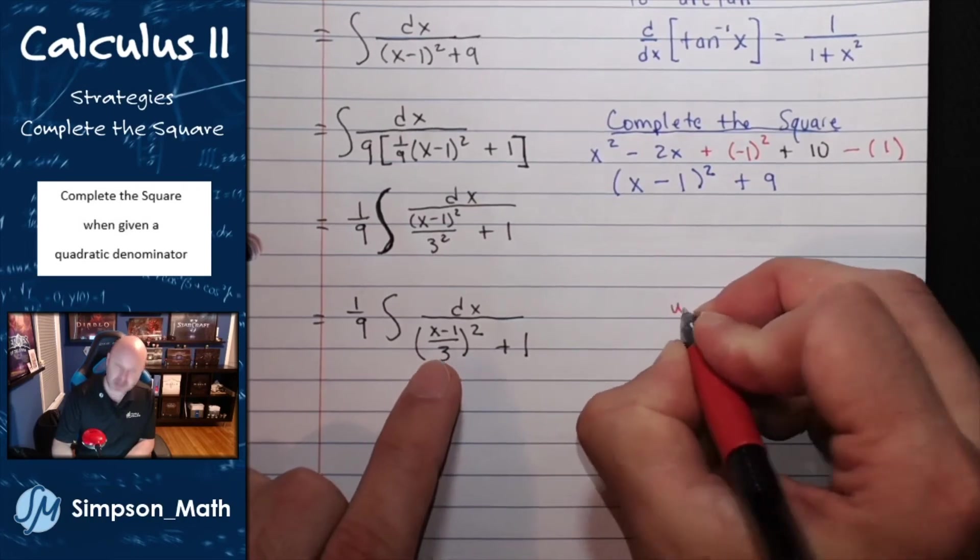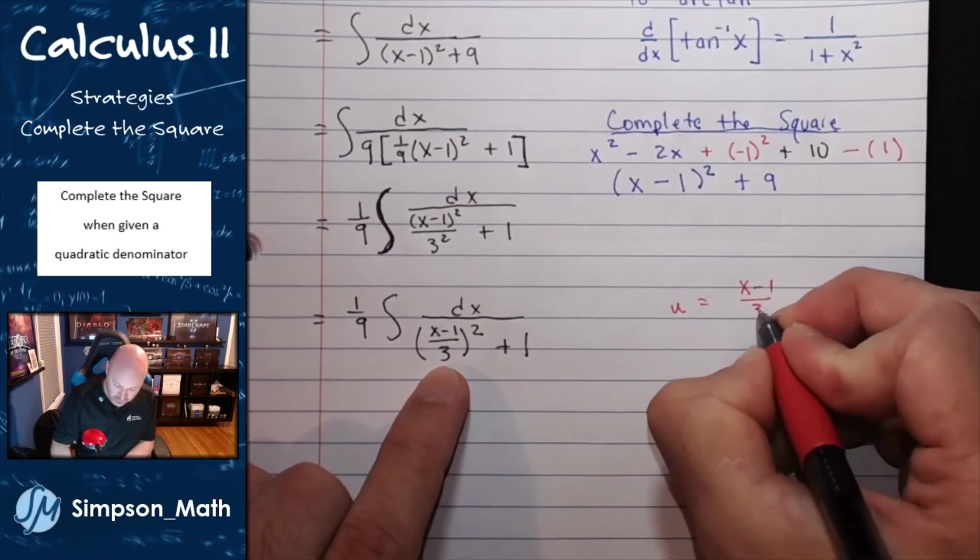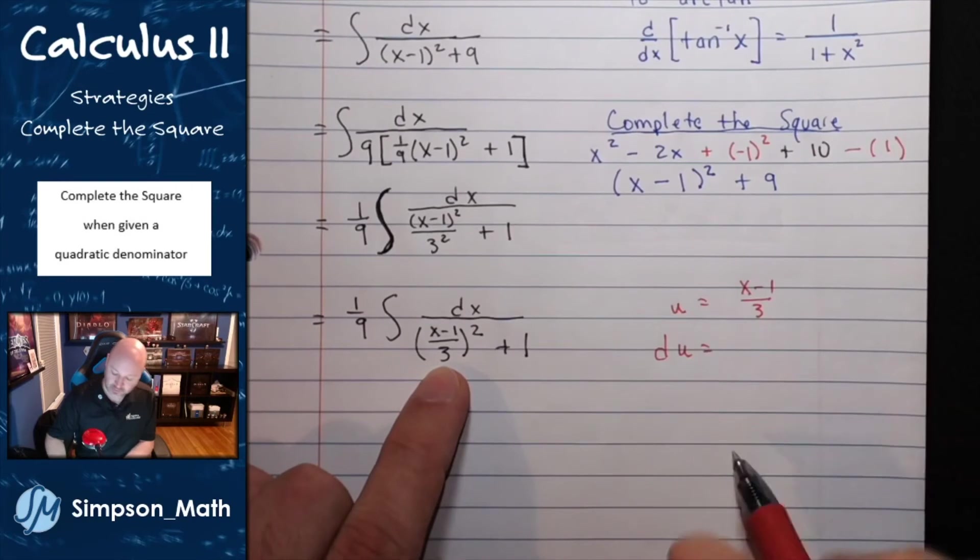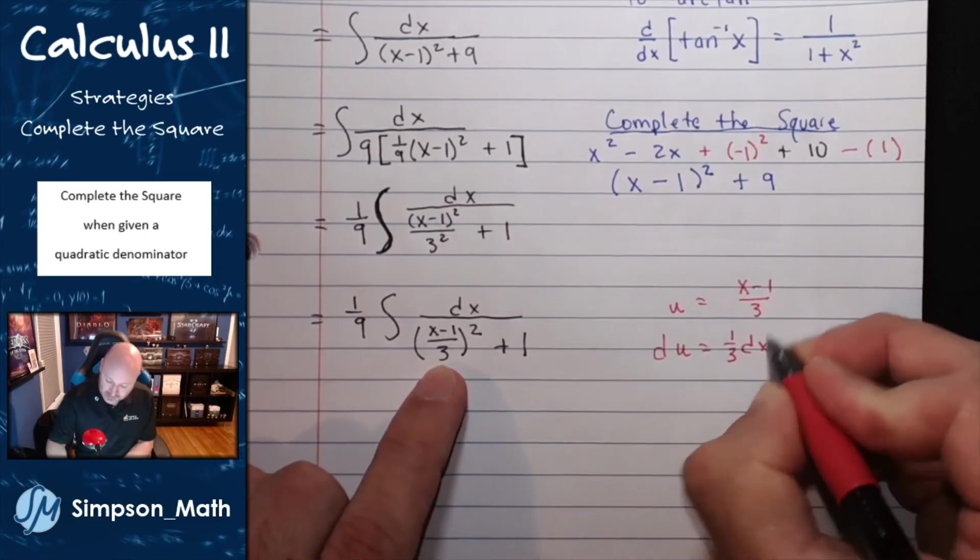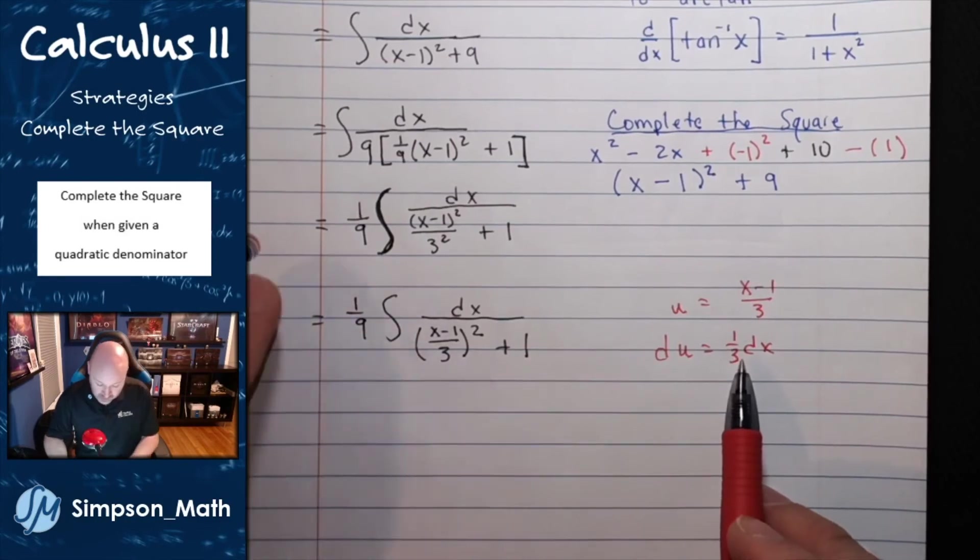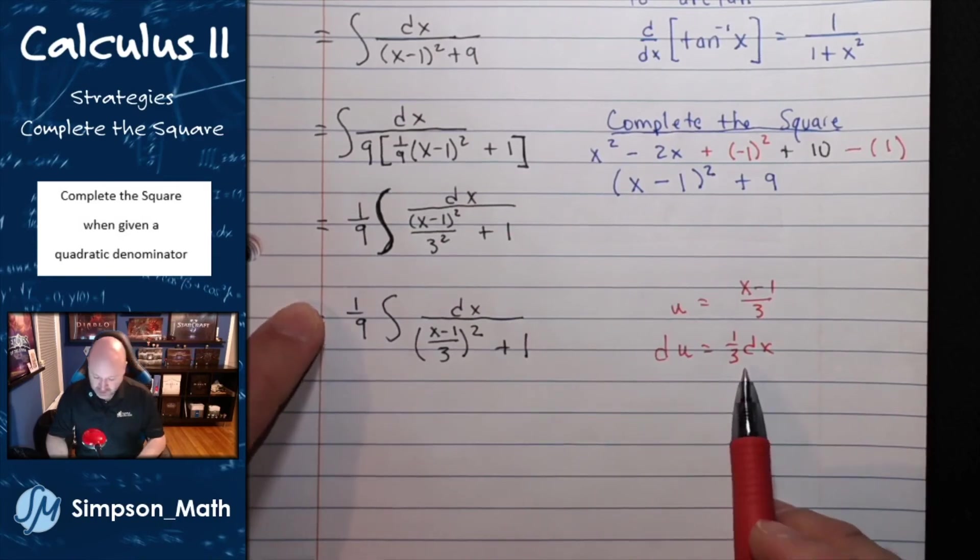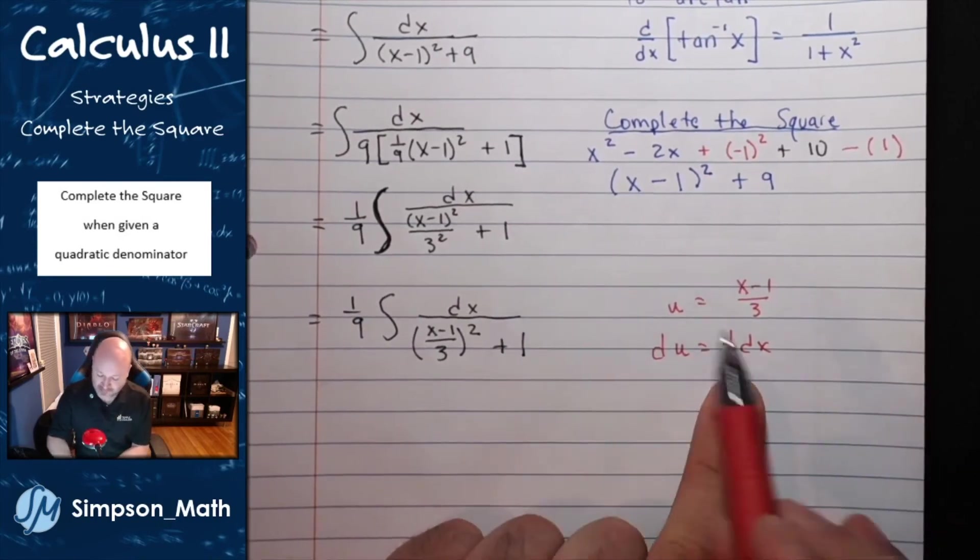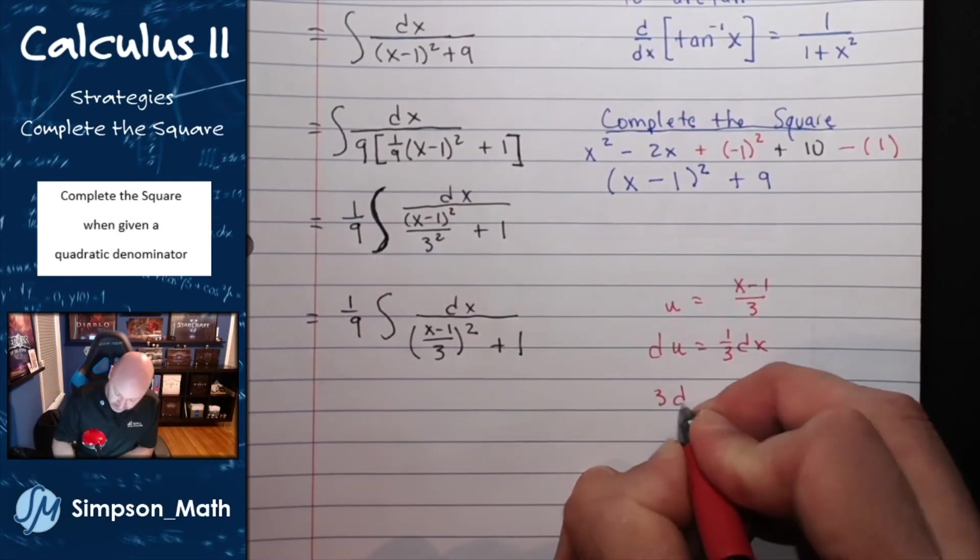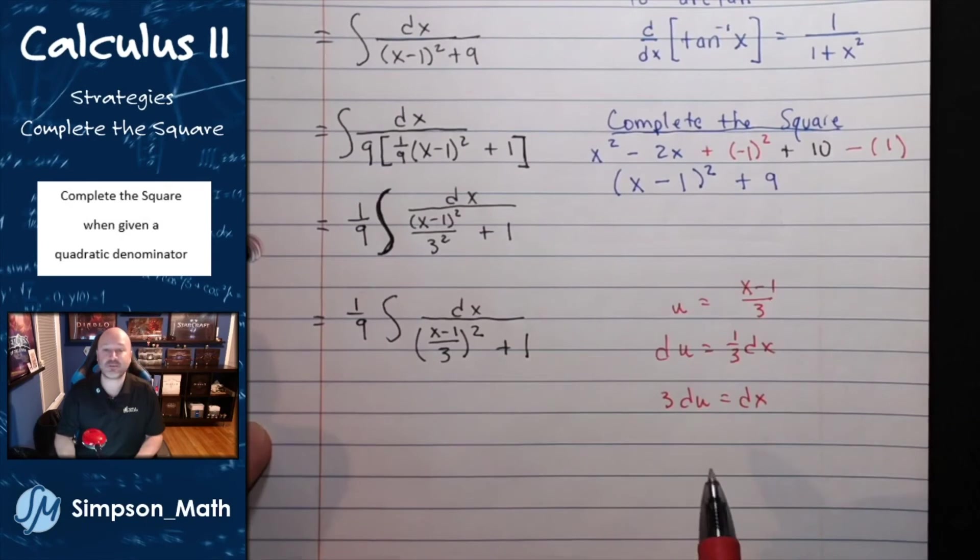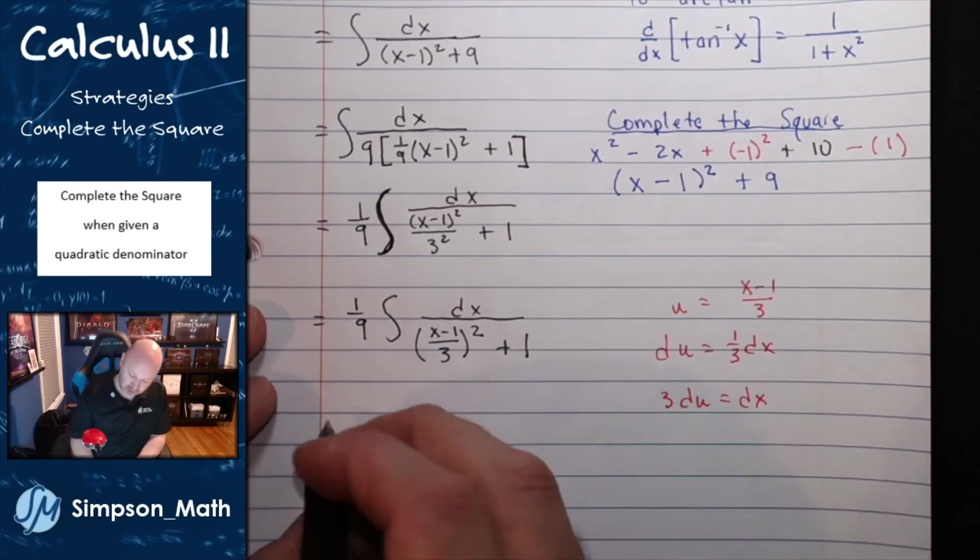If I let u be the base of this exponential, 1 third x minus 1, then du is still that 1 third. The derivative of x is just going to give me a dx. The 1 will go out to a constant. And I do have that 1 ninth out there. I'll just kind of ignore it. I just want dx. I don't have a 1 third inside my integrand. So I'm just going to multiply both sides of this equation by 3. And that will allow me to use u substitution to rewrite my integral in terms of x into an integral in terms of u.